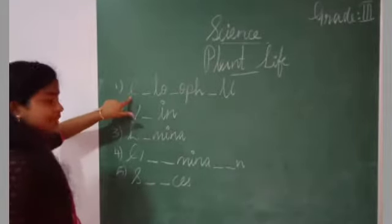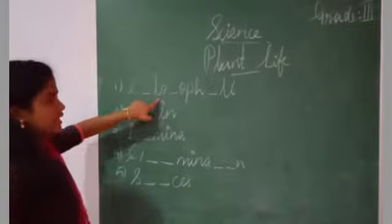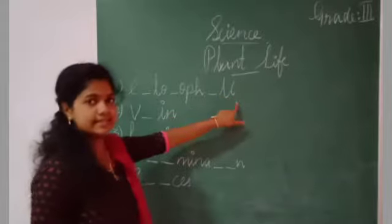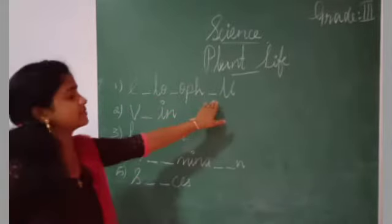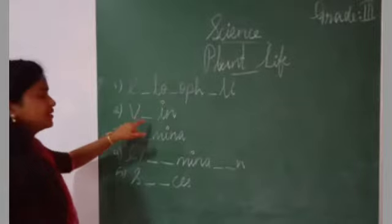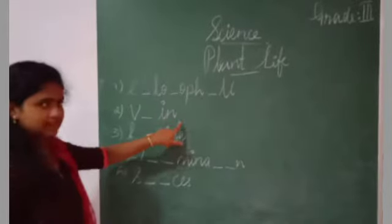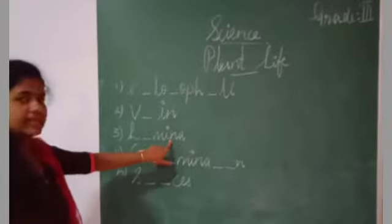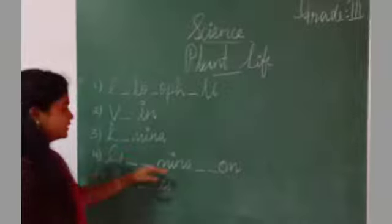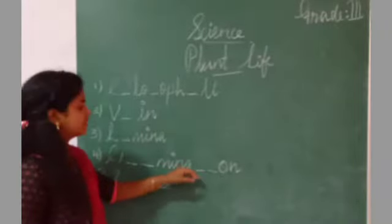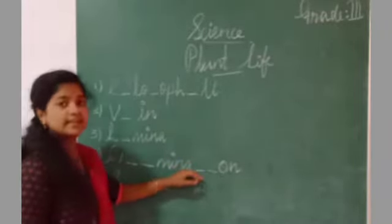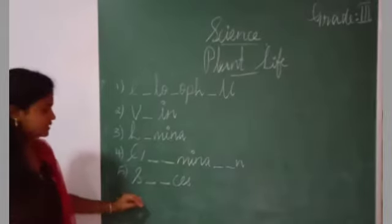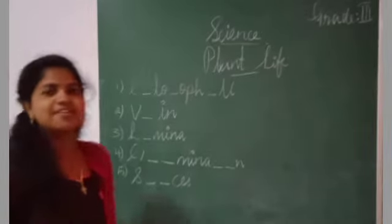First one: C-L-O-O-P-H-L-L. Find the missing letters. Second one: V-I-N. Third one: L-I-N-A. Fourth one: G-I-N-A-O-N. Fifth one: S-C-E-N. Find the missing letters.